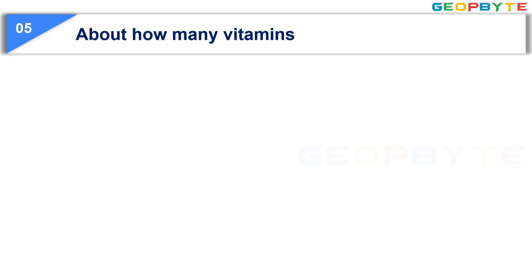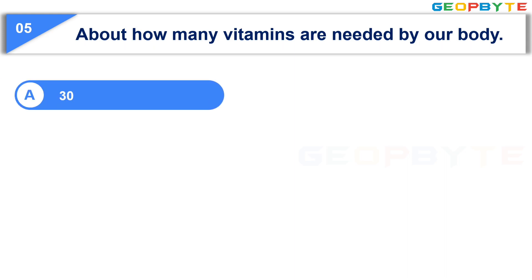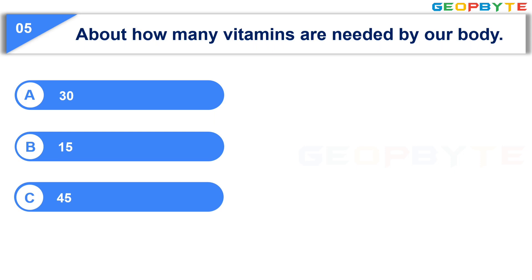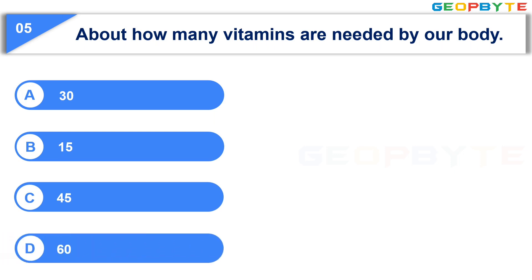About how many vitamins are needed by our body? Option A: 30. Option B: 15. Option C: 45. Option D: 60. Your time starts now.